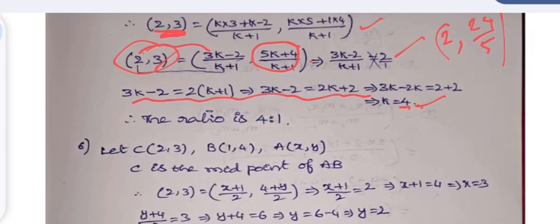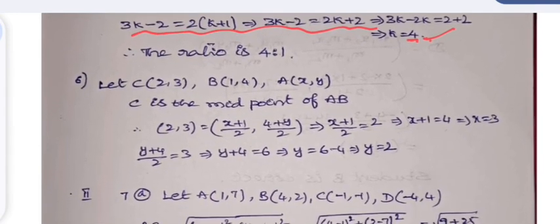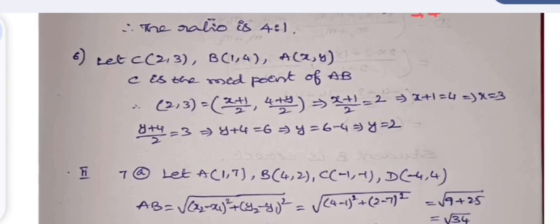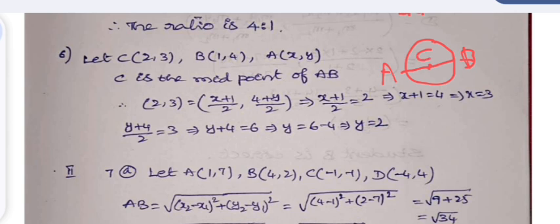For question 6, let C be the center of the circle with coordinates (2, 3). The center of a circle is the midpoint of any diameter. Diameter AB passes through center C, where B is at (1, 4) and we need to find point A.